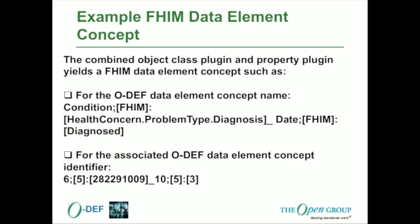At the Austin Conference in July, I went through a detailed example of how the federal health information model has data element concepts and how those could be transformed into concepts that are easy for people to interpret. Going through the taxonomy of the model itself, you've got, for example, health concern — it's a problem type and a diagnosis, and it has a date that it was diagnosed. That concept can be represented by a unique identifier similar to an IP address — a number-dot-number-dot-number — which computers can respond to, while humans can read the words that make the concept name understandable.